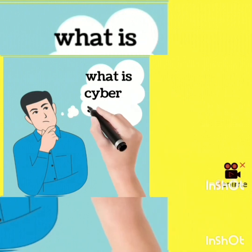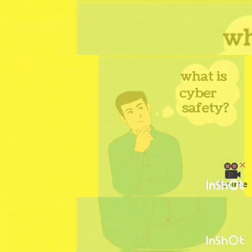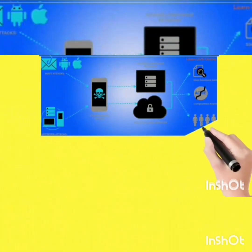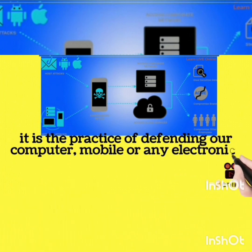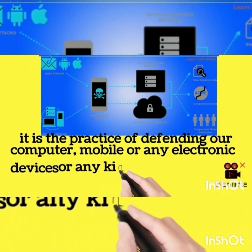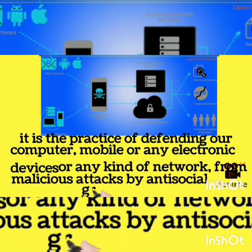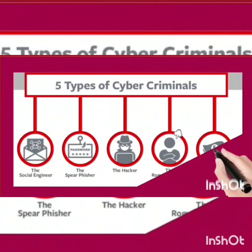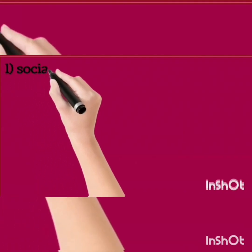Cyber safety and security is the practice of defending our computers, mobiles, or any electronic devices or any kind of network from malicious attacks by anti-social groups. There are five types of cyber crimes. The first is social engineering.